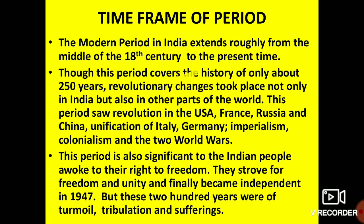This modern period covers a history of about 250 years. Revolutionary changes took place during this period not only in India but in other parts of the world also. This period saw revolutions in the USA, France, Russia and China, unification of Italy and Germany. Colonialism means the policy or practice of acquiring full or partial control over another country.